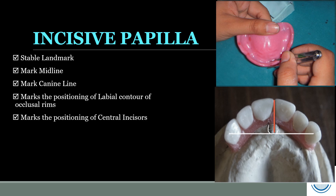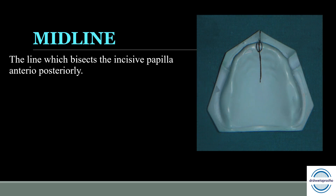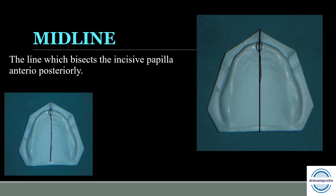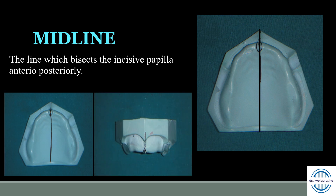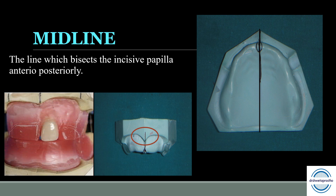The midline is a line which bisects the incisive papilla anteroposteriorly. The incisive papilla is a much more reliable landmark for the midline than the labial frenum. The midline should be extended down the front of the cast so that it is visible and helps in arranging the maxillary central incisors.